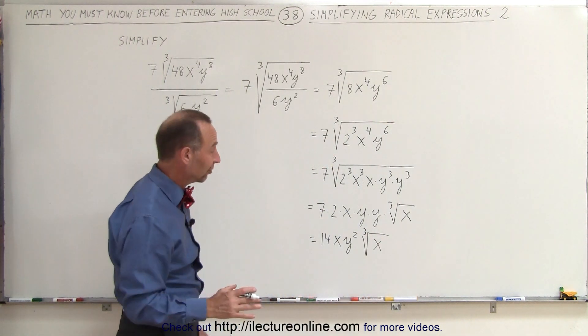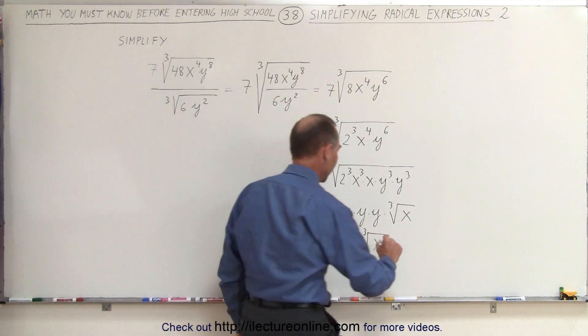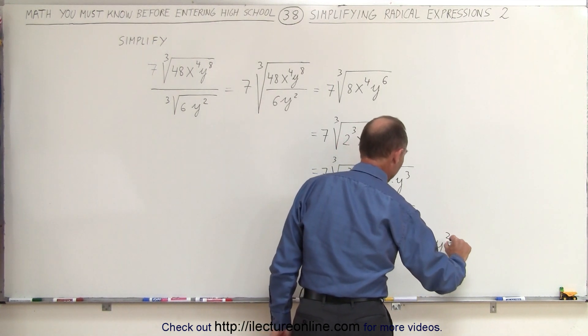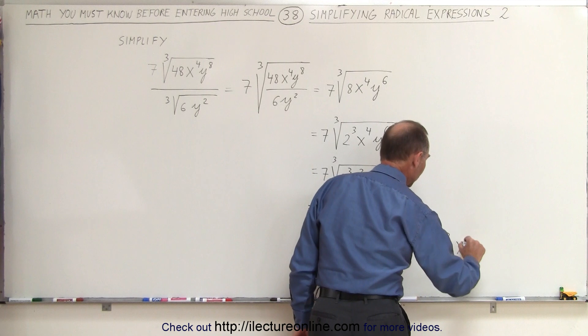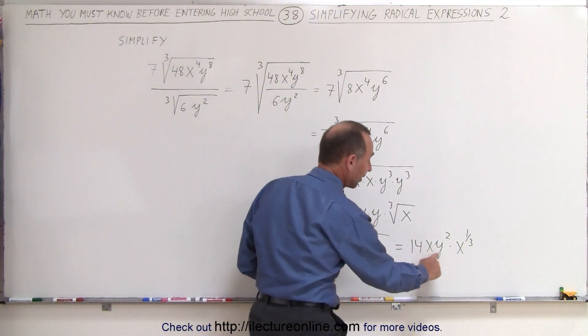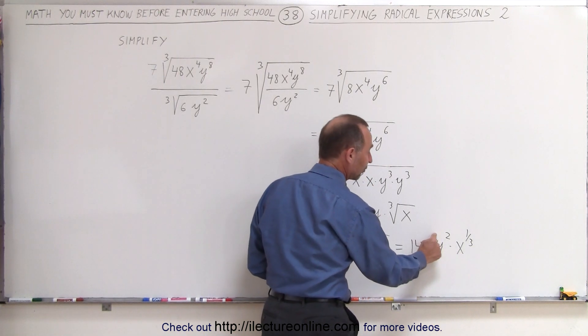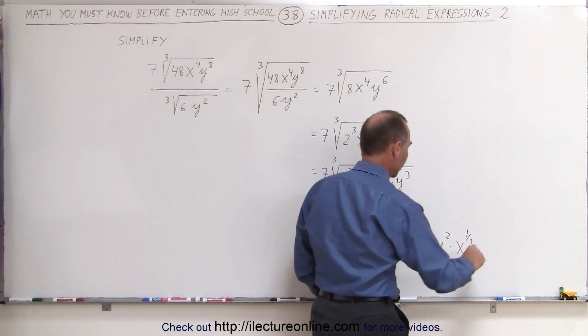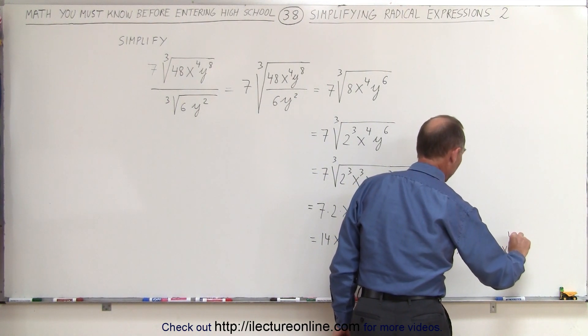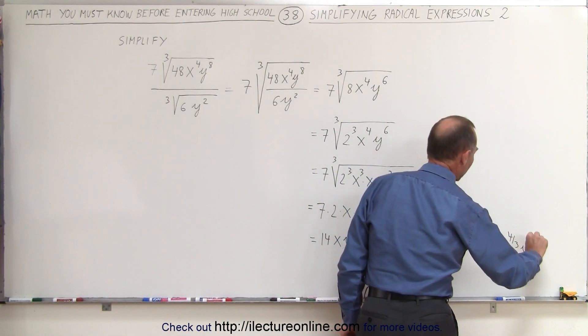And of course, if you don't like the radical symbol, you can take that last part and write it as 14xy squared times x to the 1/3rd power. And then if you like, you can combine this and this together. x to the 1st times x to the 1/3rd will give you 14x to the 4/3rds power y squared.